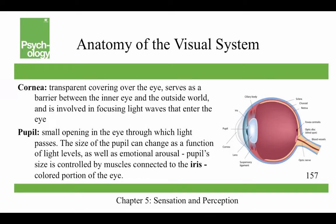Let's switch to vision and the anatomy of the visual system. The cornea is a transparent covering over the eye serving as a barrier and involved in focusing light waves. These light waves are transmitted across the cornea and enter the eye through the pupil, a small opening through which light passes. The size of the pupil can change as a function of light levels as well as emotional arousal — in low light conditions like a candlelit dinner, the pupil is dilated to allow more light in, but pupil dilation is also a mark of emotional arousal.